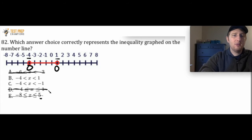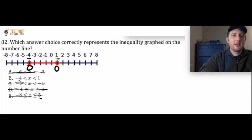We're now left with B and C. C is incorrect because it includes negative 1, and the values go beyond negative 1 — we also have 0 here. So B is going to be correct. X is some value greater than negative 4 but less than 1. That is how you'd read this: X is something greater than negative 4 and X is less than 1.